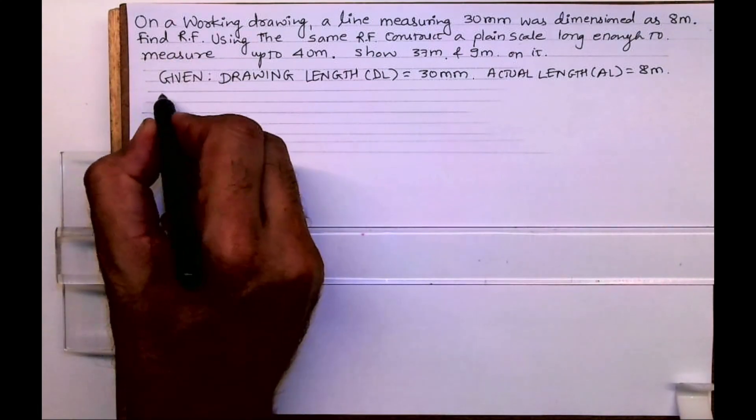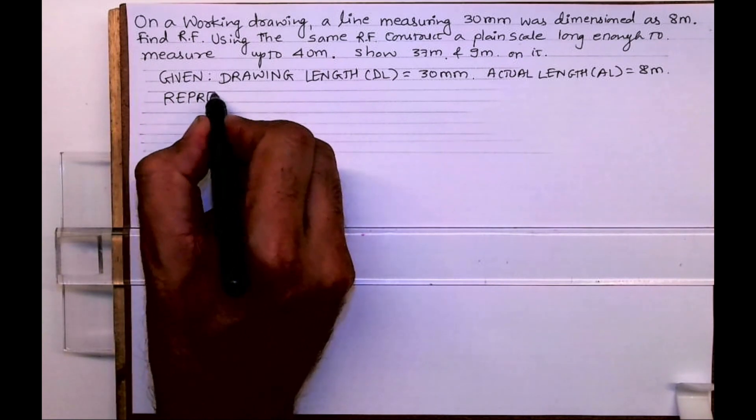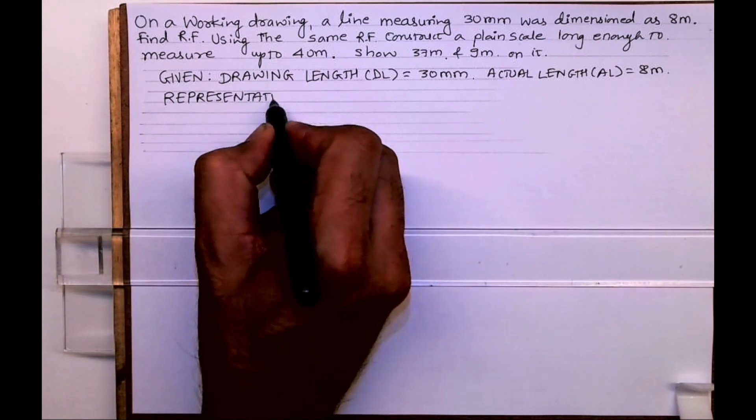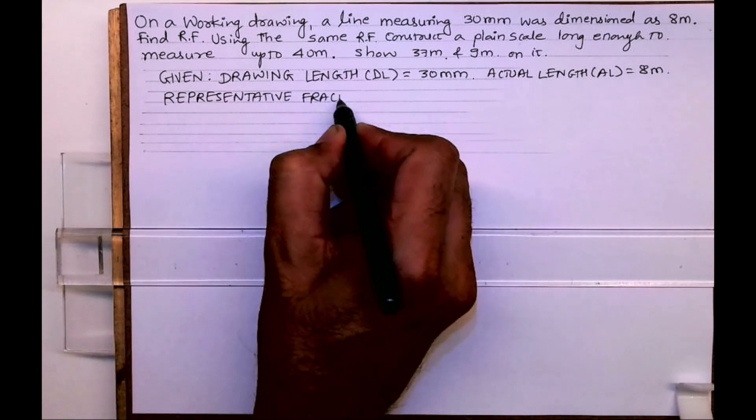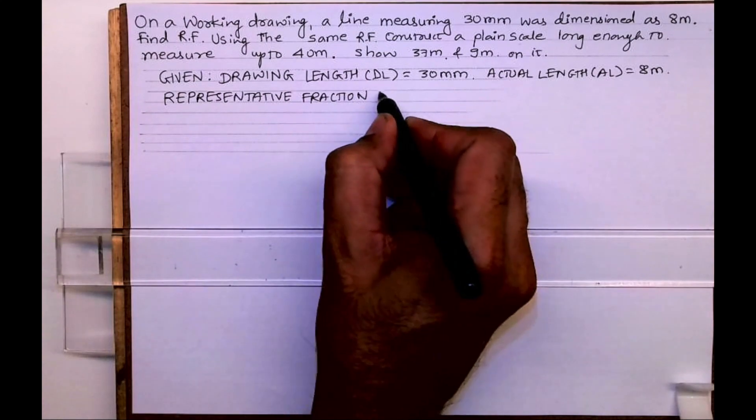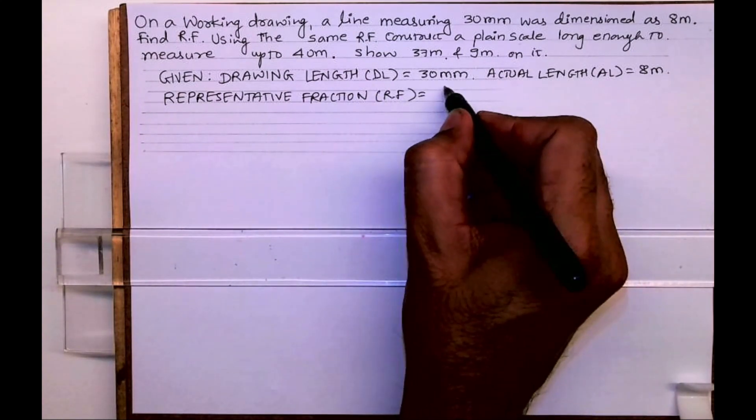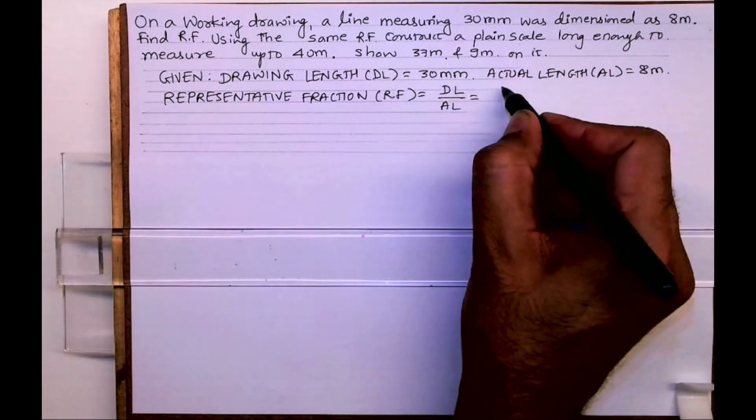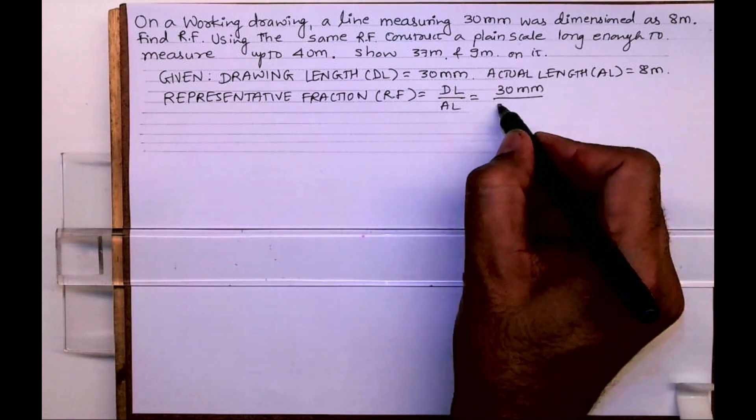So we need to find RF first. RF is representative fraction. Drawing length upon actual length, so that is 30 millimeter upon 8000 millimeter, so it would be 3 upon 800.